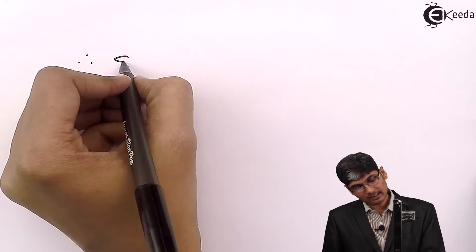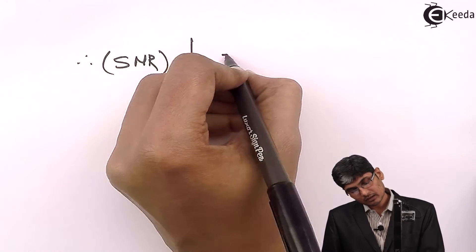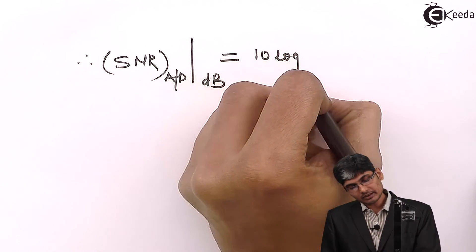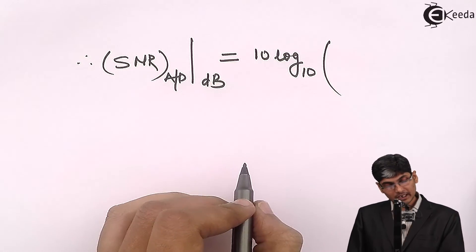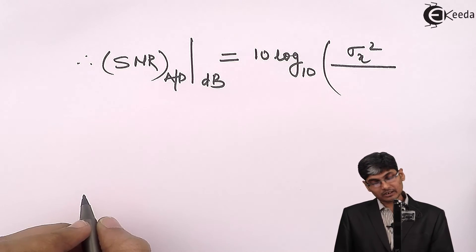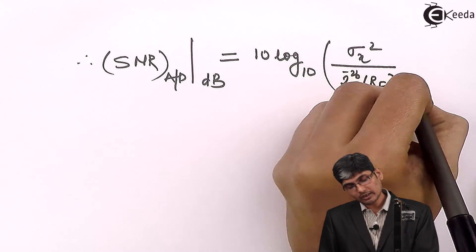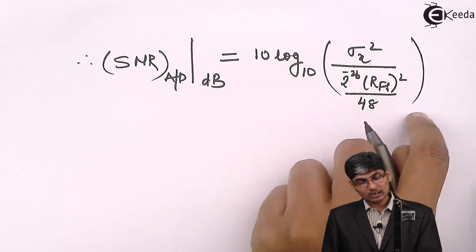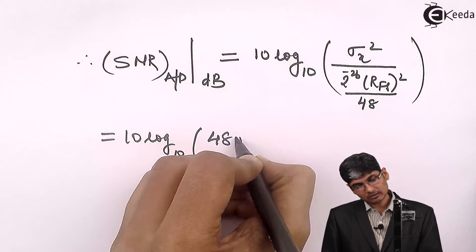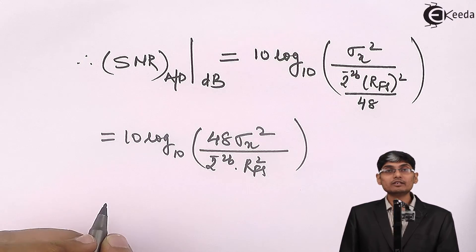Therefore, SNR of an A to D converter in dB is given as 10 log base 10 of sigma_x² divided by sigma_e², where sigma_e² is 2^(-2B) · RFS² / 48. Bringing 48 to the numerator, this becomes 10 log base 10 of [48 · sigma_x²] divided by [2^(-2B) · RFS²].